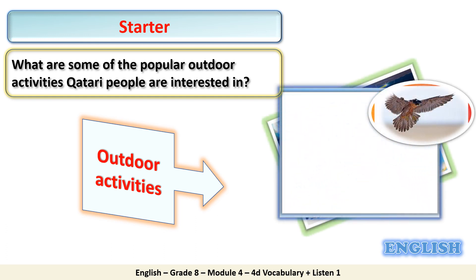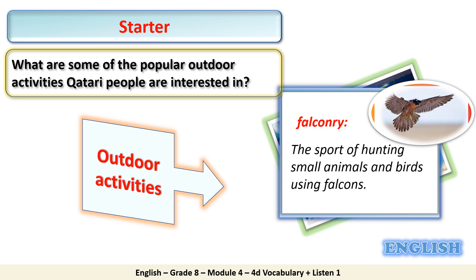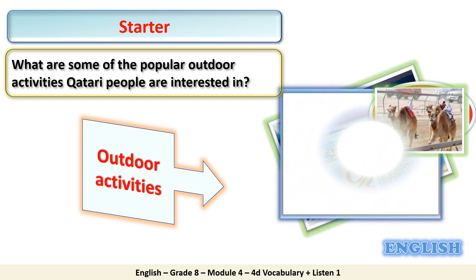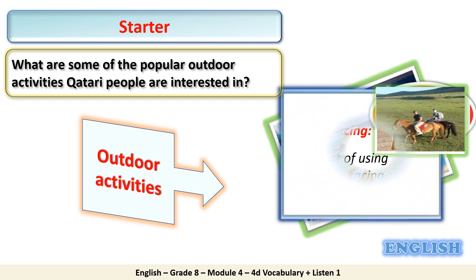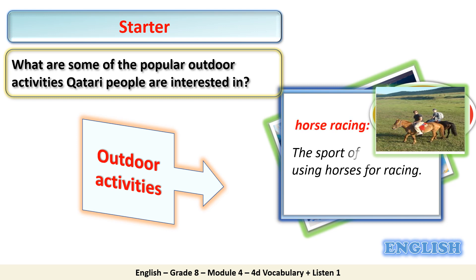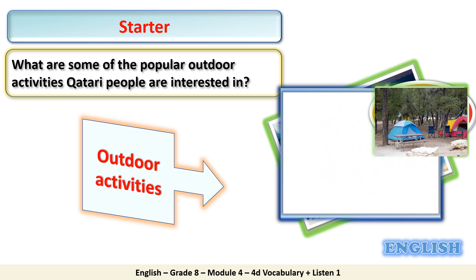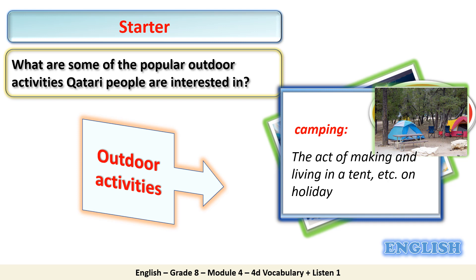What does this picture represent? Falconry — it is the sport of hunting small animals and birds using falcons. What about this picture? Camel racing — it is the sport of using camels for racing. What about this picture? Horse racing — it is the sport of using horses for racing. Finally, we have this picture. Camping — it is the act of making and living in a tent, especially on holiday.